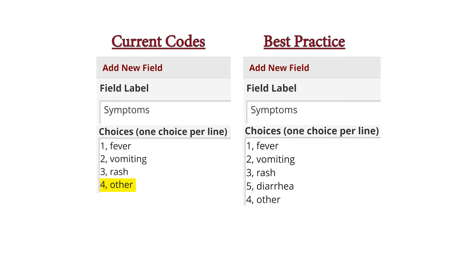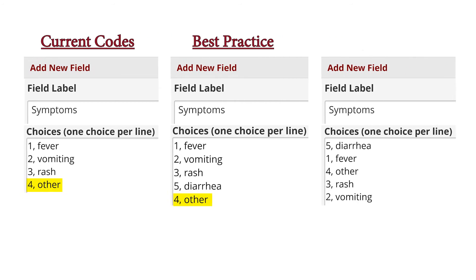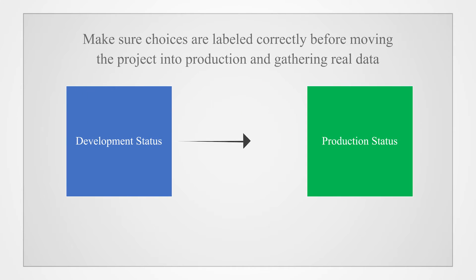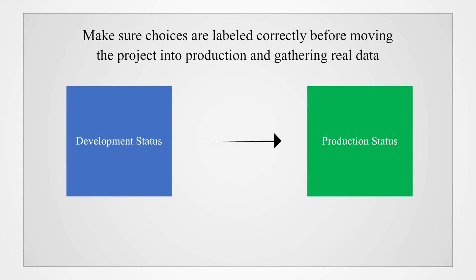The best practice is to update the order of the choices to 1 for fever, 2 for vomiting, 3 for rash, 5 for diarrhea, and 4 for other listed last. If alphabetical order is desired, then the choices should simply be reordered but not recoded, so that the order is 5 for diarrhea, 1 for fever, 4 for other, 3 for rash, and 2 for vomiting. To ensure you represent data consistently with the correct code throughout the project, it's critical to think through how the variables in the project will be coded. Make sure choices are labeled correctly before moving the project into production and gathering real data.